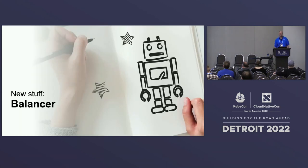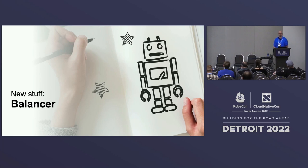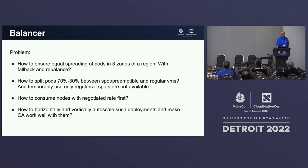HPA is about autoscaling a single deployment — or to be precise, an object that exposes a scale sub-resource. The API allows only a single target. What if you have a more complex use case? Well, then you have a problem — a problem that you share with other Kubernetes users.